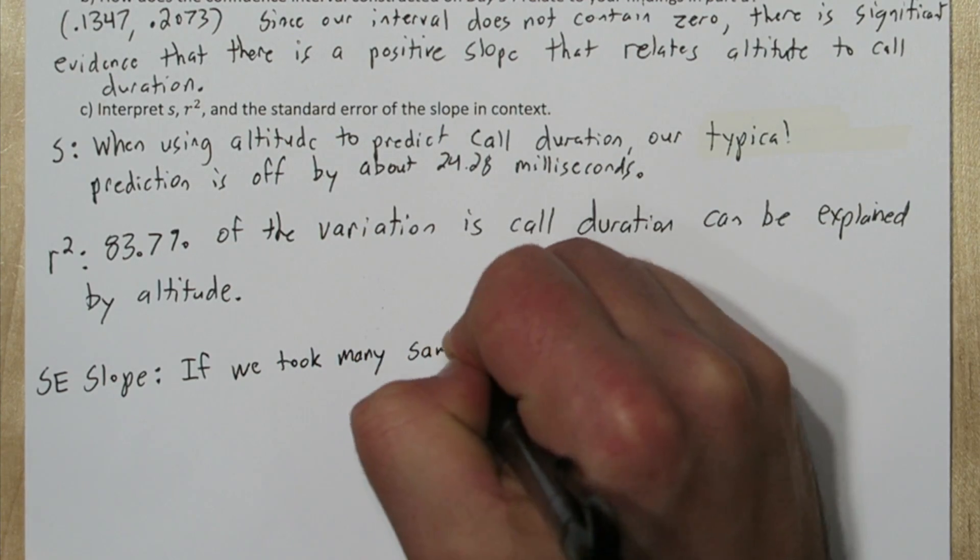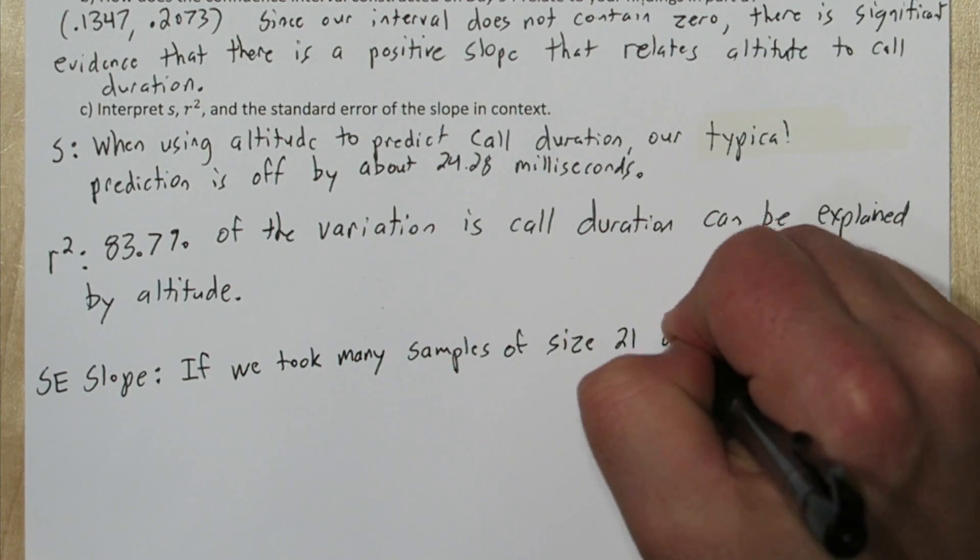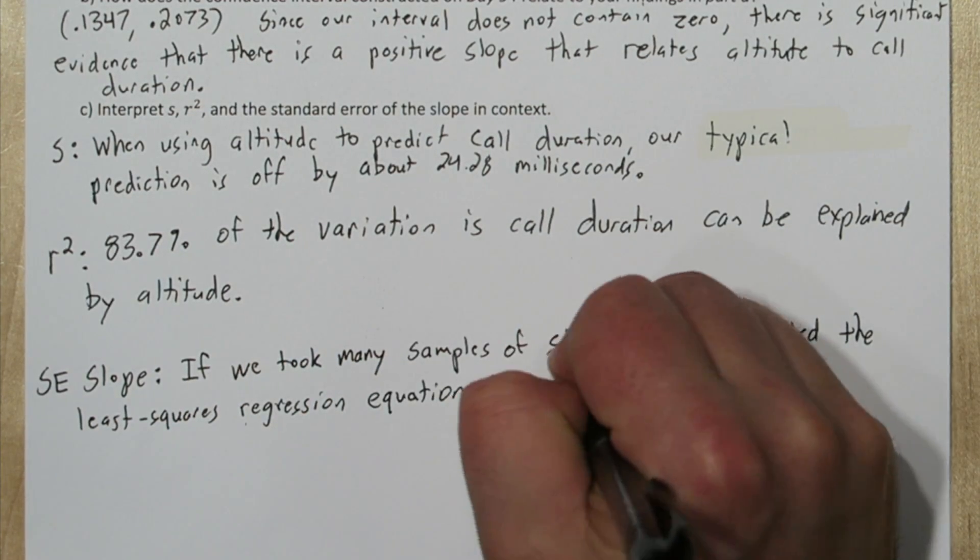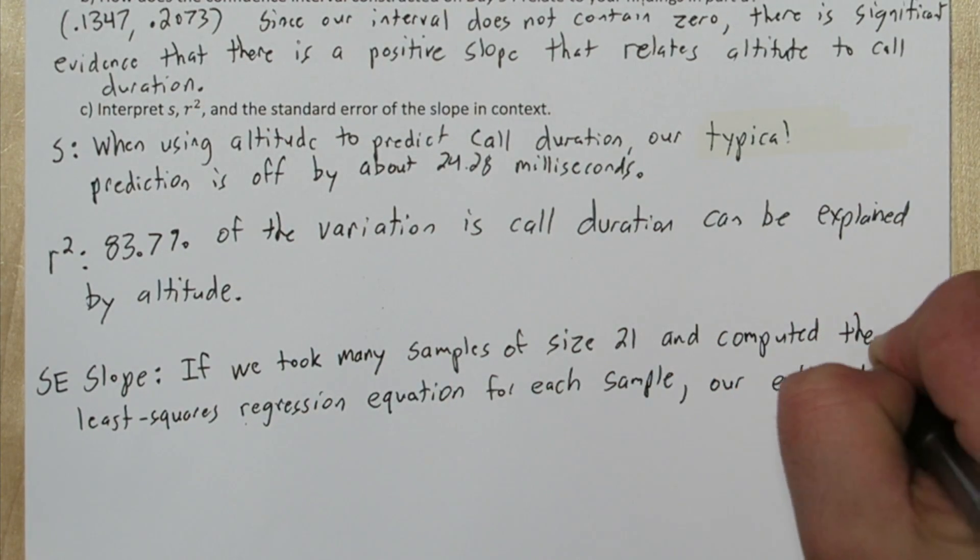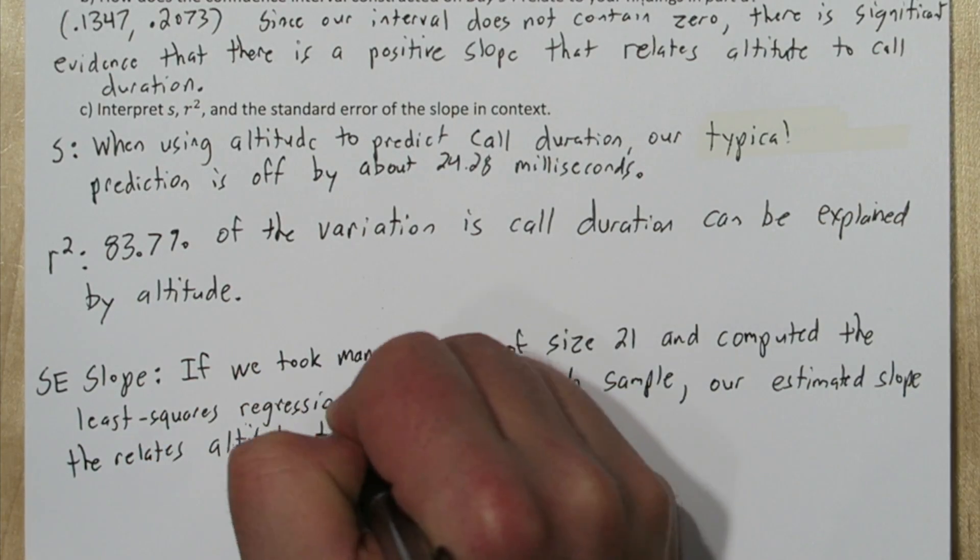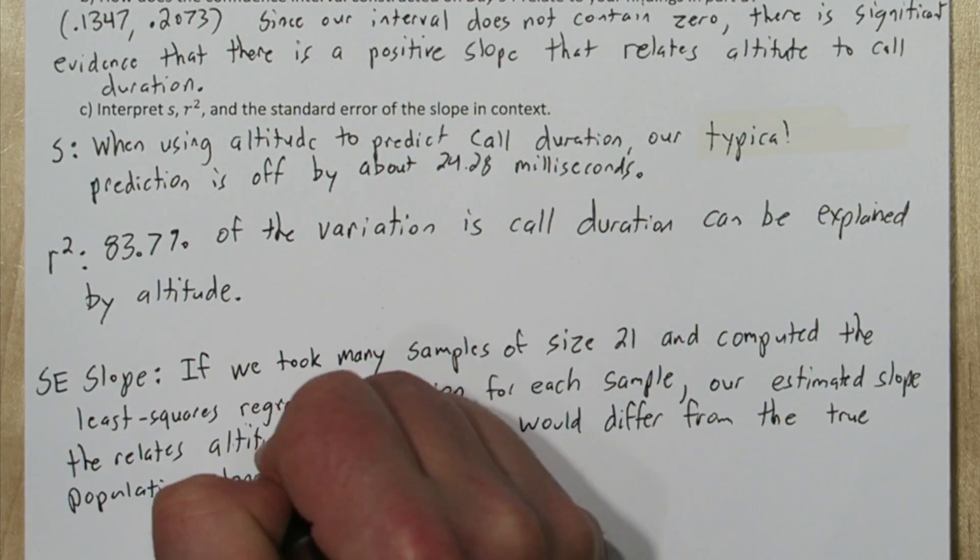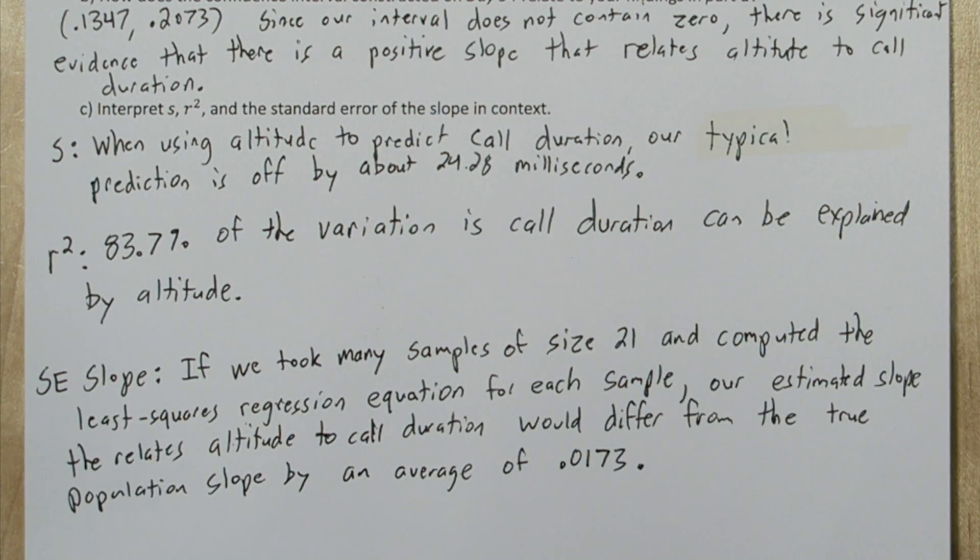Finally, we'll interpret the standard error of the slope. If we were to take many samples of size 21 and compute the least squares regression equation for each sample, our estimated slope that relates altitude to call duration would differ from the population slope by an average of 0.0173.